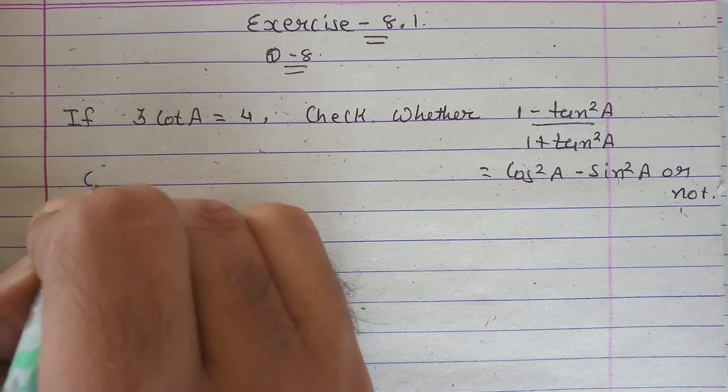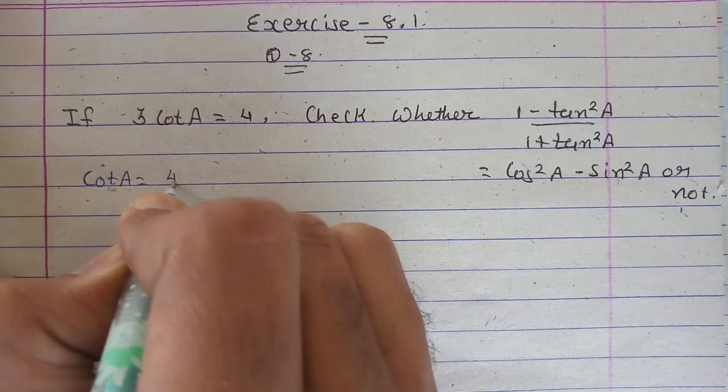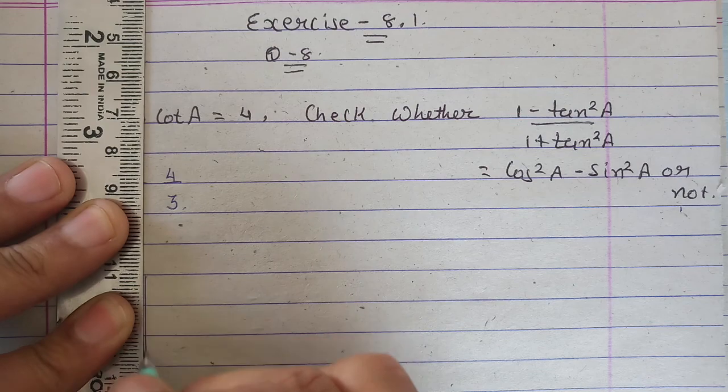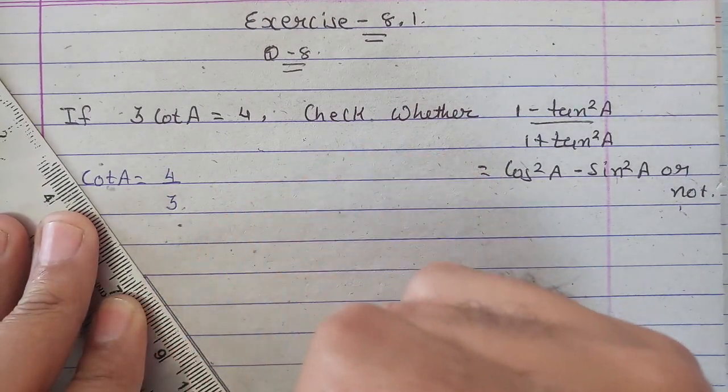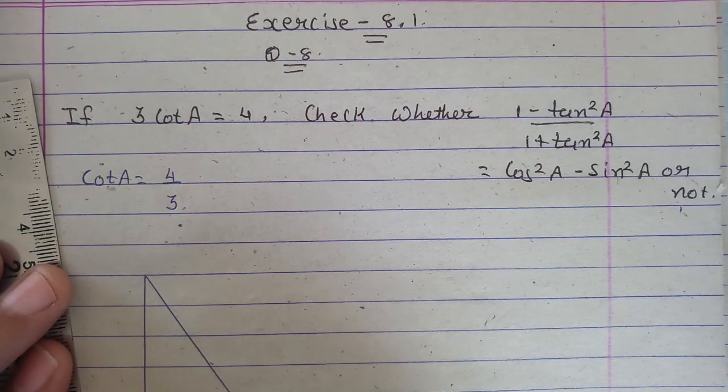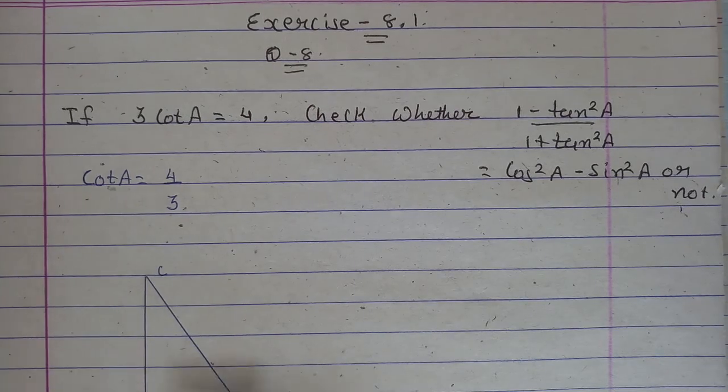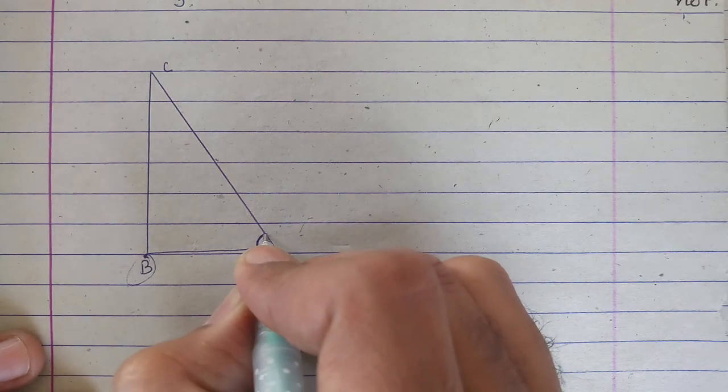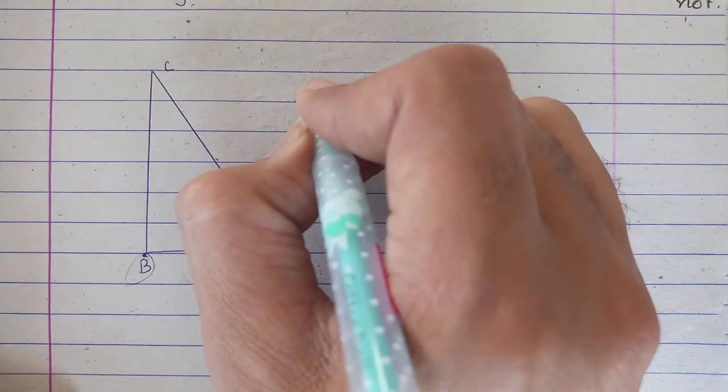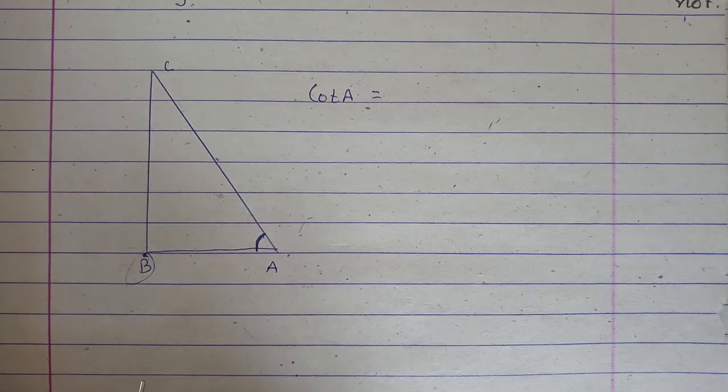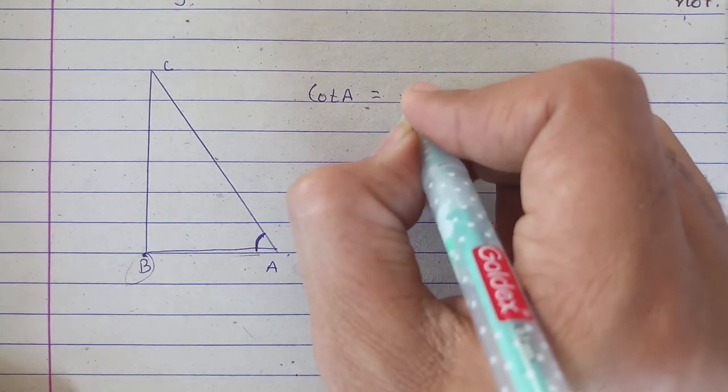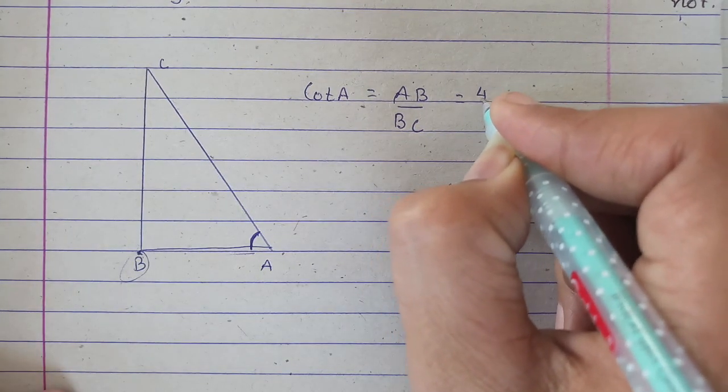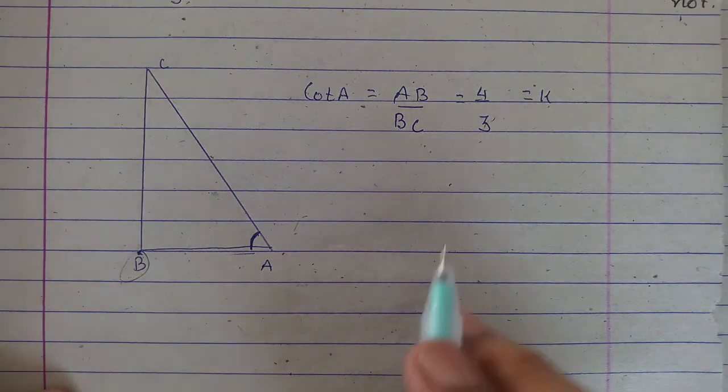From this we can write cotA is equal to 4/3. Let's see, this is our triangle ABC where B is the right angle. For angle A, if we write the cotA formula, cotA will be adjacent upon opposite, which is AB upon BC. AB upon BC, and AB's value is already given as 4 by 3. Let's say this is K.